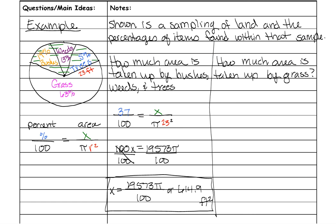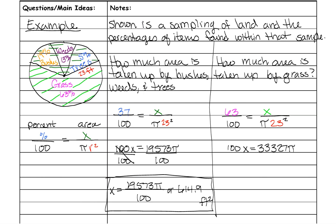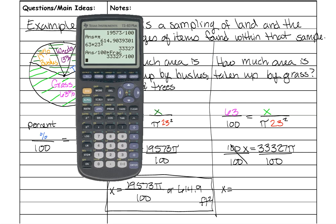For the second problem, grass only is 63%. Cross-multiply: 63 times 23 squared is 33,327 pi. Divide both sides by 100 — this fraction also cannot reduce, so we leave it as the ugly fraction. Multiply the fraction times pi to get the estimated answer: 1046.99, which rounds up to 1047 feet squared.